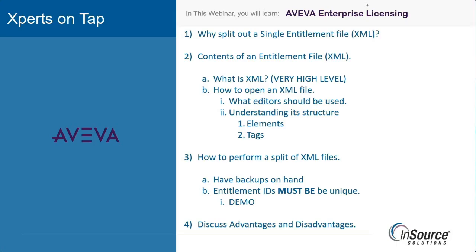Hello, this is Glenn Yancey with In-Source Solutions. In today's Experts on Tap, we're going to discuss enterprise licensing and why we would ever split out an entitlement file for enterprise licensing. These entitlement files are XML files made up of elements and tags. We're going to discuss the structure of these XML files, the proper editors for them, and how we perform a split of these files if we need to separate licenses for one plant versus the other.